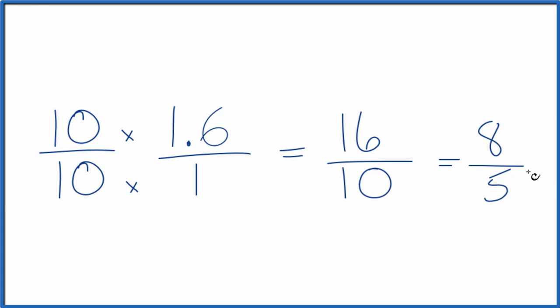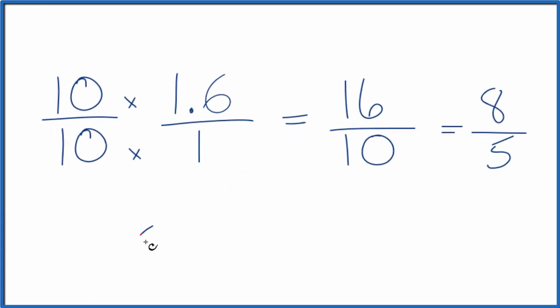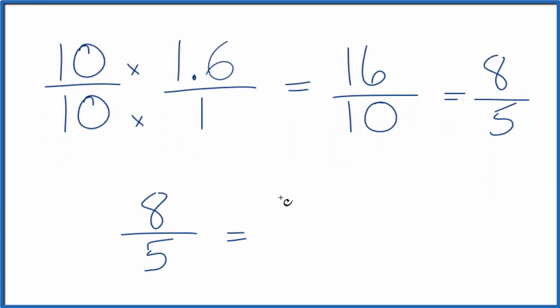Let's convert this improper fraction here to a mixed number. So 5 goes into 8 one time with 3 left over. Then we bring the denominator across and we have 1 and 3 fifths.